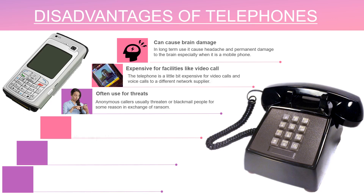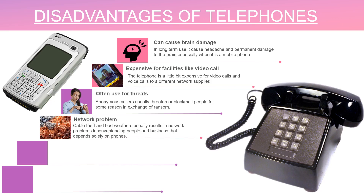Another disadvantage is network problems. Cable theft makes it very difficult when using a landline because people steal the cable and sell it, affecting companies and individuals who depend on phones daily. People also steal the batteries that power the towers when there is no electricity, so if those are stolen there is no connectivity on cell phones, and stolen cables mean no connectivity on landlines — it is a very serious problem.